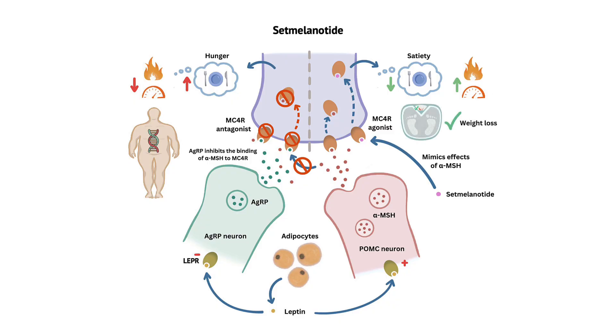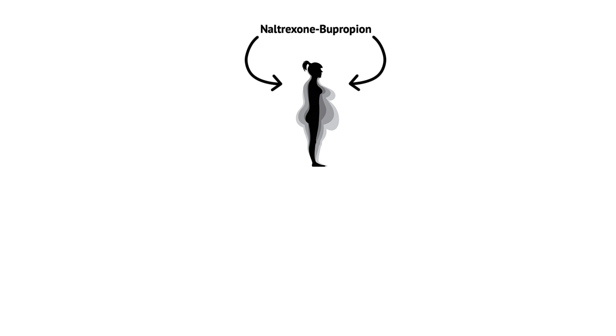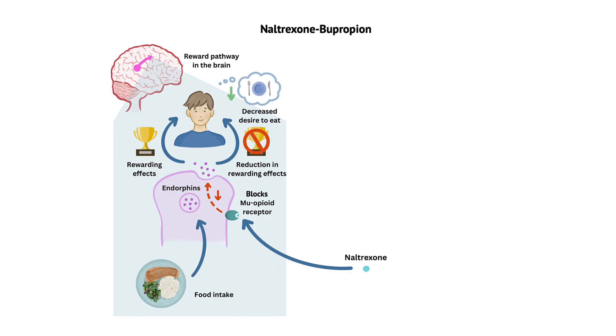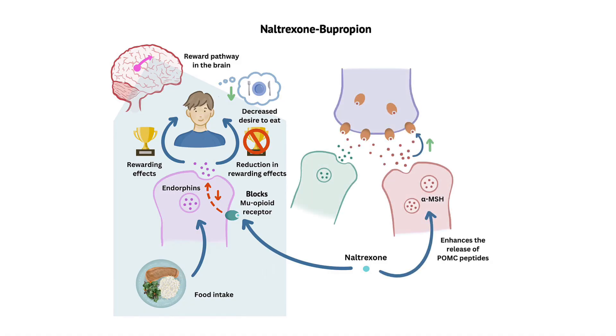Moving on to our next weight loss agent — naltrexone-bupropion, a combination drug consisting of two active ingredients: naltrexone and bupropion. Just like phentermine-topiramate, this combination medication works through a dual mechanism of action to help manage obesity. Naltrexone functions as an opioid antagonist, specifically targeting the mu-opioid receptors within the reward pathway of the central nervous system. By blocking these receptors, naltrexone modulates endorphin activity, ultimately diminishing the rewarding effects of food intake and resulting in a decreased desire to eat. Additionally, naltrexone is thought to enhance the release of POMC peptides, such as alpha-MSH, which suppresses appetite and promotes satiety.